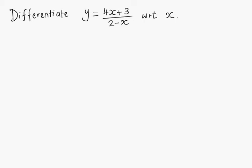Like in the product of functions, we will name one of the functions u and another function v. In this case, the function in the numerator is named u, and the function in the denominator is labeled v. So we let u equals 4x plus 3, and v equals 2 minus x.